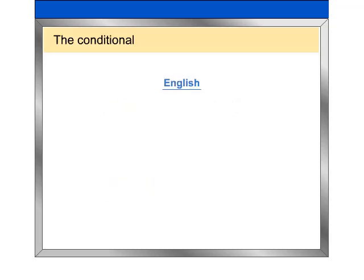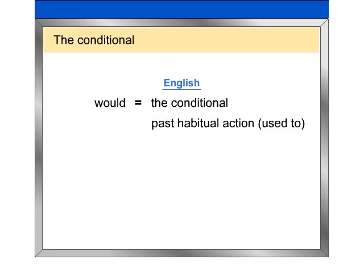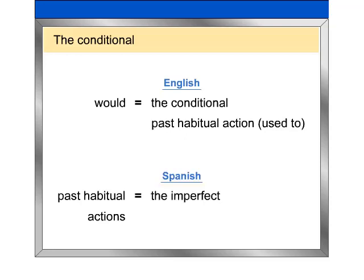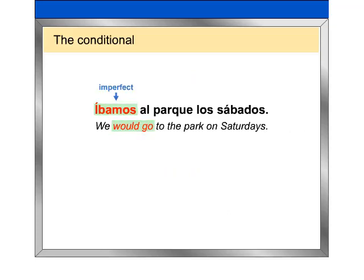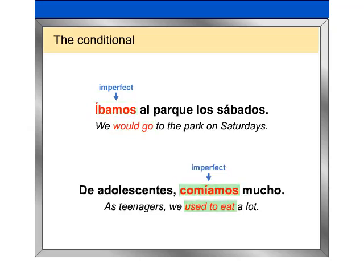The English 'would' is often used with a verb to express the conditional, but it can also mean 'used to' in the sense of past habitual action. To express past habitual actions, Spanish uses the imperfect, not the conditional. For example: Íbamos al parque los sábados. De adolescentes, comíamos mucho.